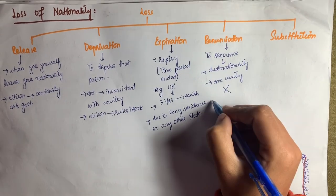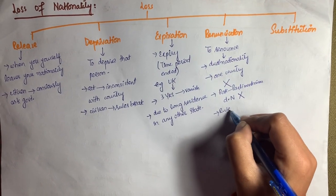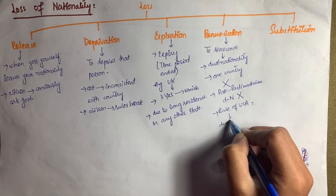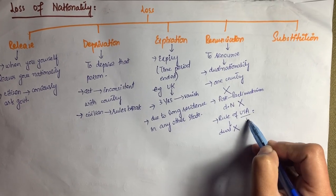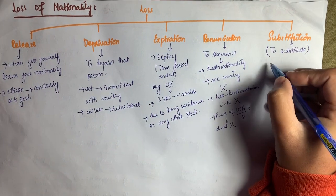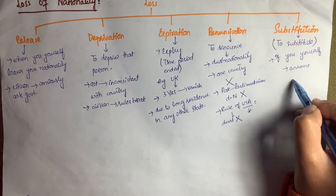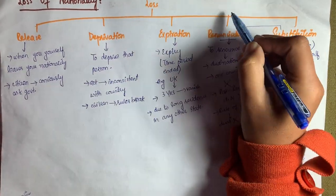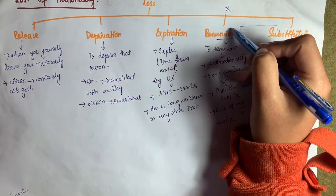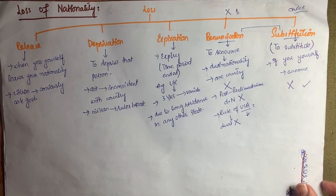Renunciation means if you are a citizen of one state and a national of another — in the case of dual nationality, you have to renounce one nationality. For example, in Pakistan, parliamentarians cannot hold dual nationality. According to the rules of the USA, if you are a citizen of the USA and hold the nationality of any other country, it is unacceptable. Substitution means to replace — if you yourself substitute your nationality, the original nationality is lost. The difference is: in renunciation you must give up one nationality, while in substitution you have a choice.